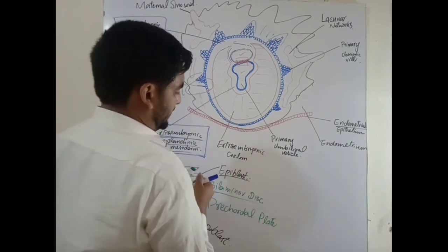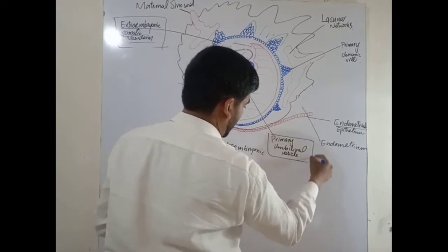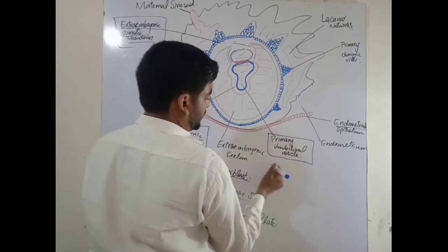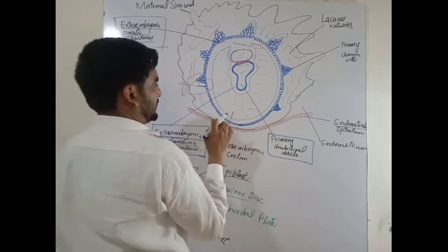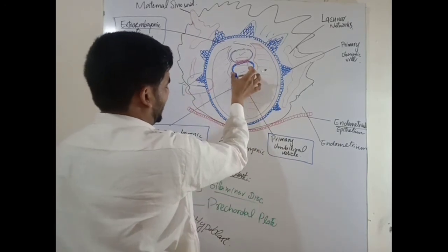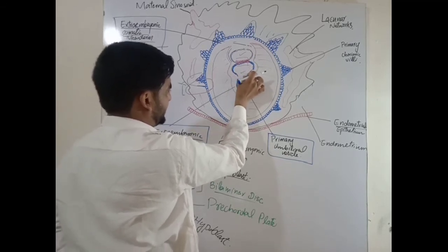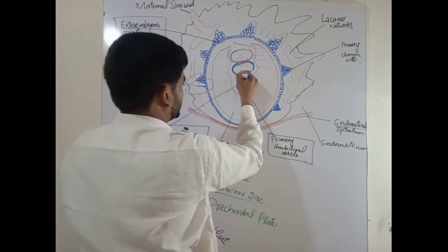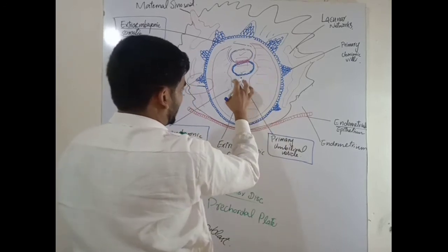In humans, the primary umbilical vesicle is preferred over 'yolk sac' because in humans it does not contain yolk. So it is preferred to be called the primary umbilical vesicle. With the passage of time, this primary umbilical vesicle pinches, and due to this pinching it is reduced in size.